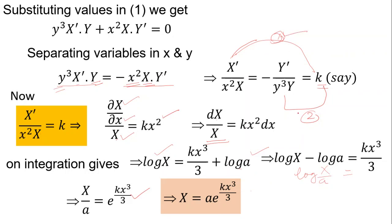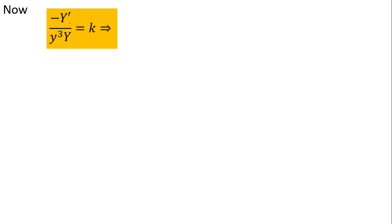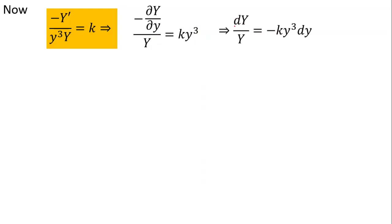Now from equation two: -Y'/(y³·Y) = k, so -Y'/Y = k·y³. Replacing Y' by dY/dy and multiplying both sides by dy, we get -dY/Y = k·y³·dy, which can be written as dY/Y = -k·y³·dy.